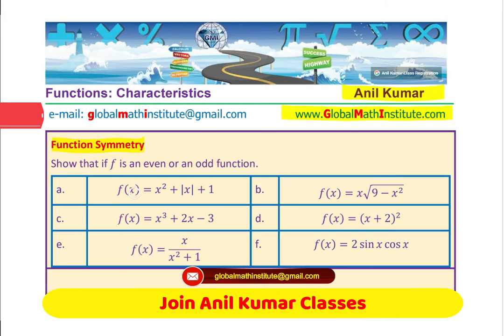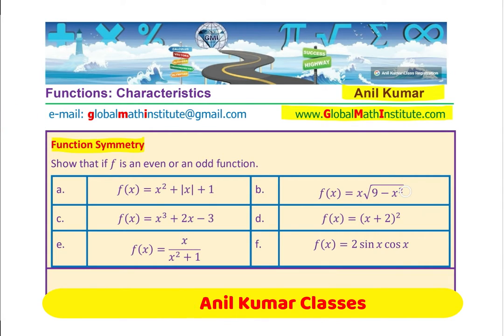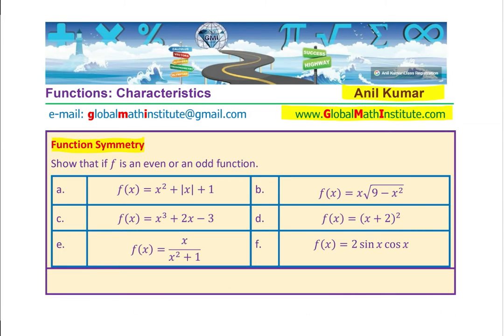In question number 1, we have x square plus absolute value of x plus 1. B is f(x) equals x times square root of 9 minus x square. C is f(x) = x³ + 2x - 3, then the function is (x + 2)² and we have rational function x/(x² + 1), and a trigonometric function 2 sin x cos x. You can pause the video and answer this question.